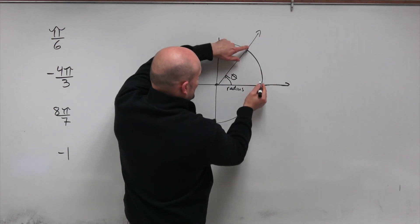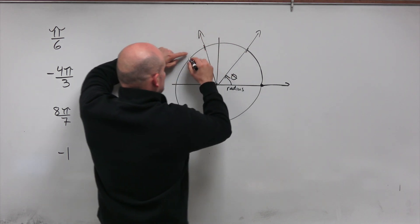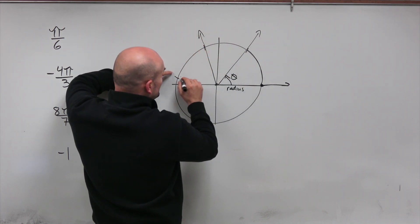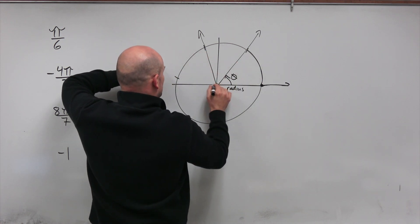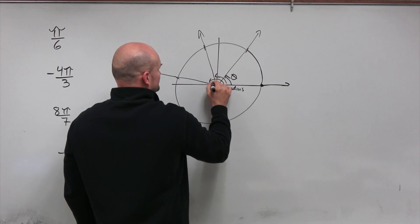Now, if I was to take this radius and wrap it around again, then this would be two radians. And then if I did that a third time, you could see I'd get really close. And again, my radians are a little off here. But you can see this would be three radians.